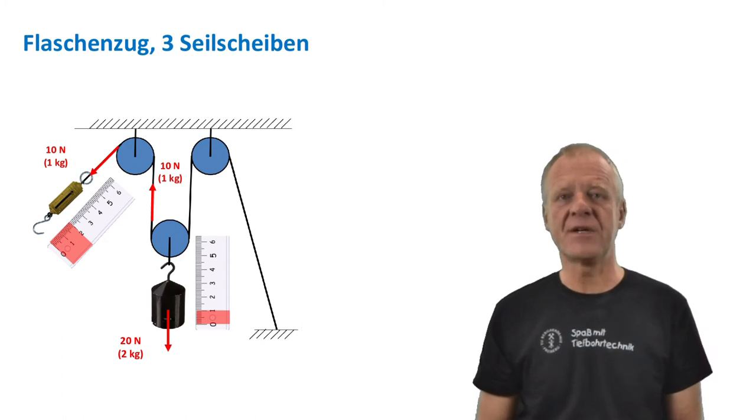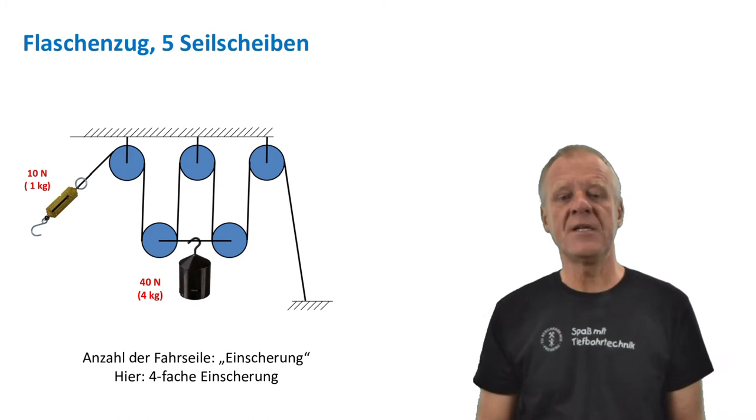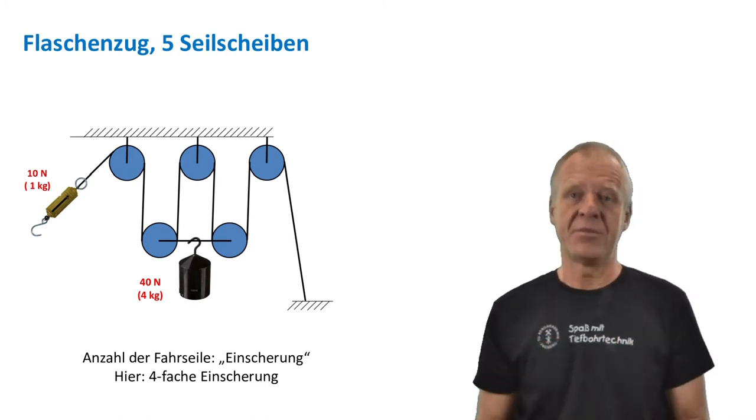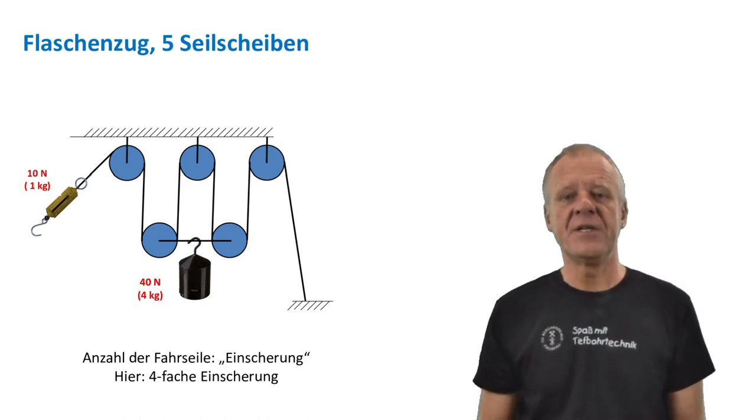Alright, now we can expand the pulley system further. For example, by adding two more pulleys. So we have four traveling lines. In technical terms, we have a four-fold setting.